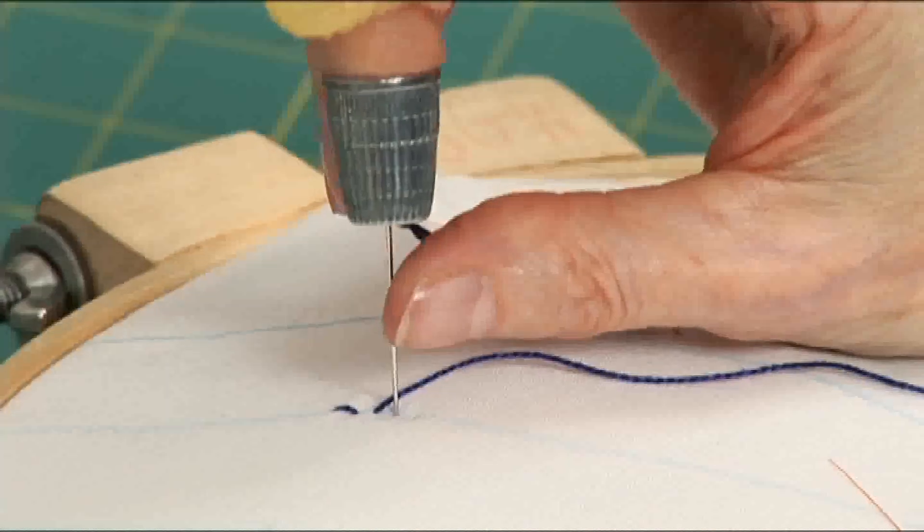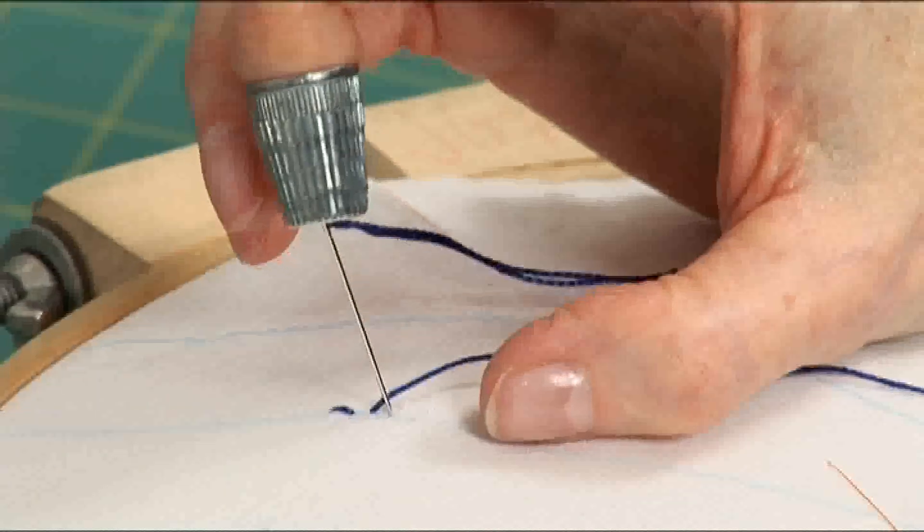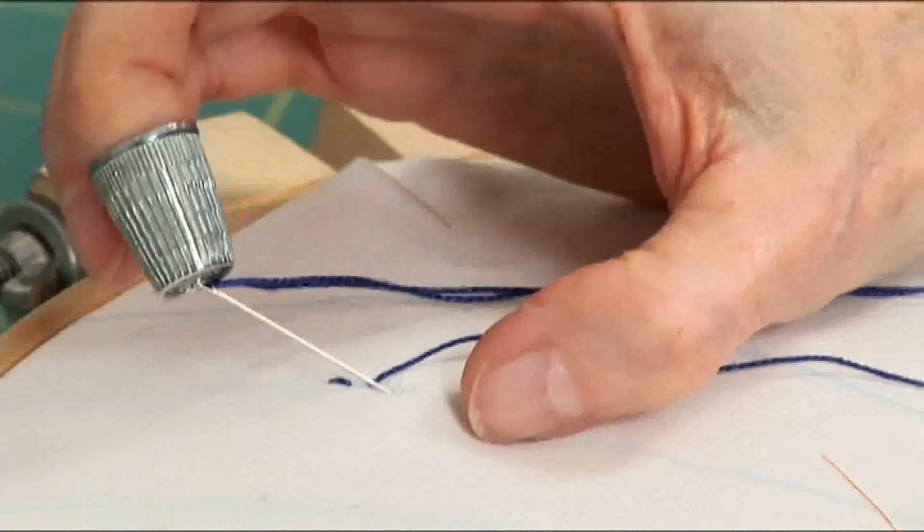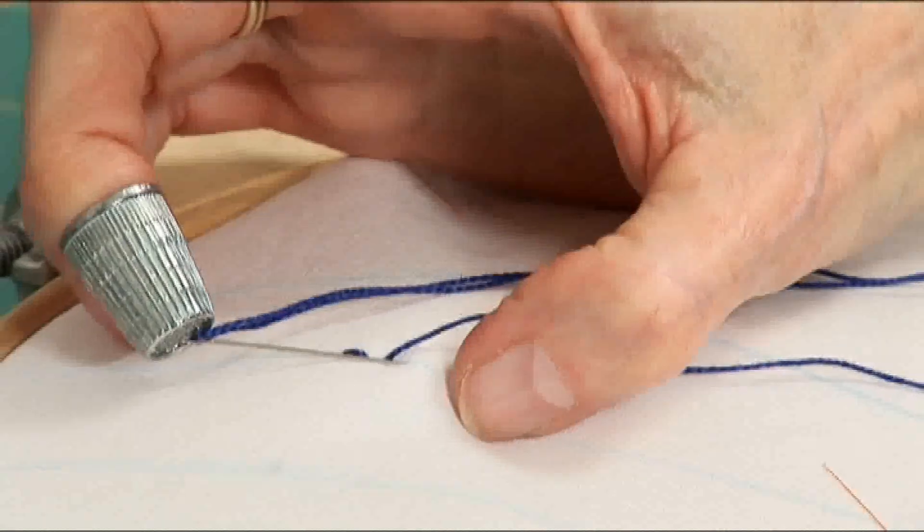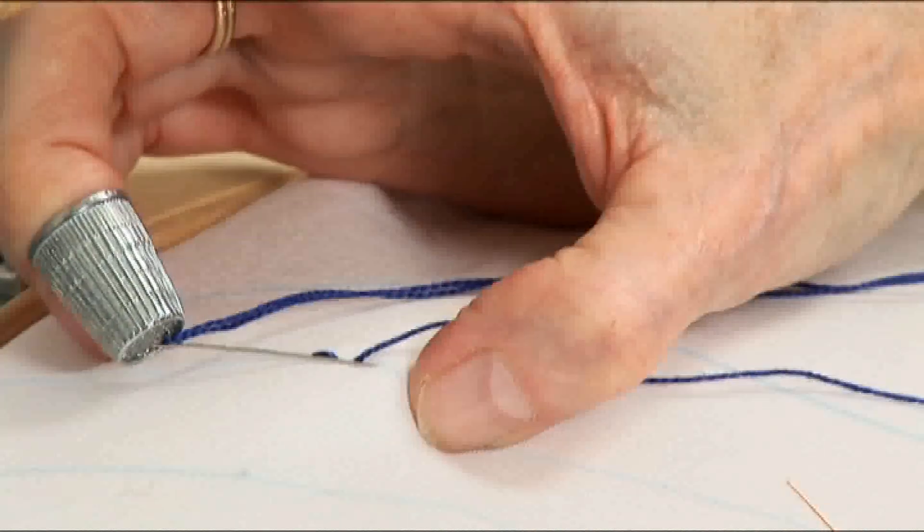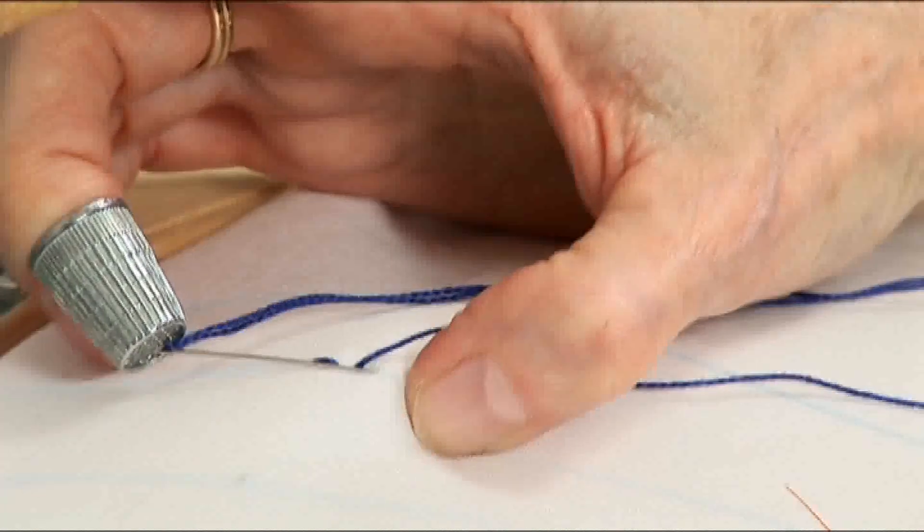Reposition the thimble. Back off with the thumb. Lay the needle down. Lay the needle down as you push up with the underneath fingers and down with the thumb to create that little hill.